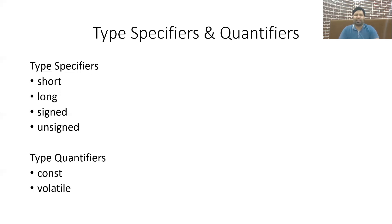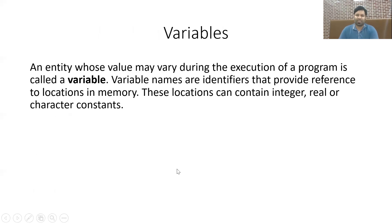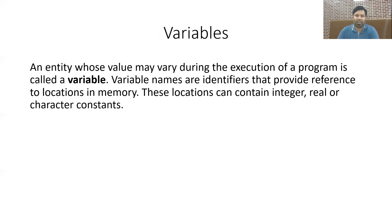A volatile can also be declared as const. A volatile const means its value cannot be changed within the program, but can be changed by some external source. A normal variable is one whose value can vary within a program — for example, 'int a' is a normal variable — whereas 'const int a' is a constant whose value cannot vary.